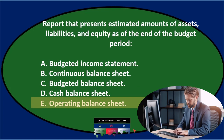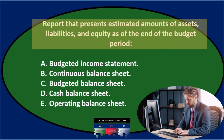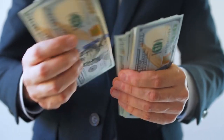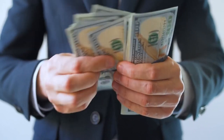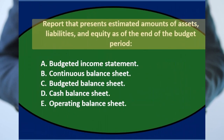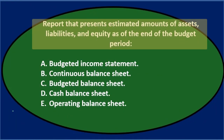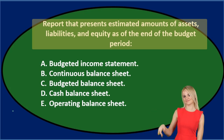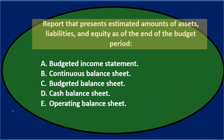Let's go through this again using the process of elimination. A report that presents estimated amounts of assets, liabilities, and equity as of the end of the budgeted period — this should be very familiar because in normal financial accounting, if you see assets, liabilities, and equity, it should ring in your head that that's a balance sheet type of thing. Budgeted financial statements still have the same concept — we're still finishing off with the balance sheet and income statement, but now they are the budgeted balance sheet and income statement.